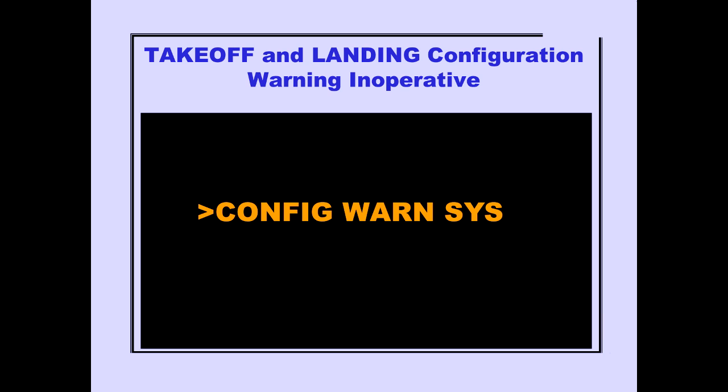If the takeoff or landing configuration warning systems are inoperative, the configuration warning system message is displayed on ICAS. If the system fails, configuration warning messages may or may not be displayed, and they may not be correct.